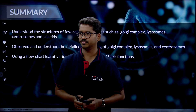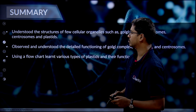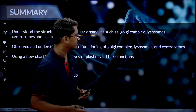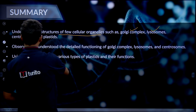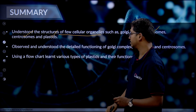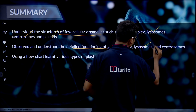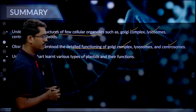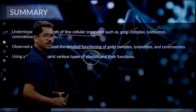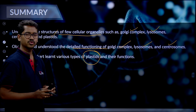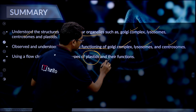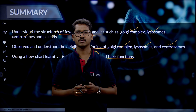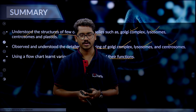Hope you understood today's session well. To summarize, we understood the structures of cellular organelles — starting with the Golgi complex, lysosomes, centrosomes, and plastids — and the detailed functioning of the Golgi complex, lysosomes, and centrosomes. We also had a detailed understanding of plastids with their classification flowchart and detailed functions. If you have any queries, you can drop them in the chat box and we will address them in upcoming sessions. Thank you so much for your focus on Turito live classes.